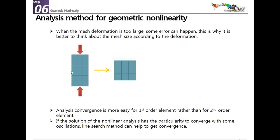Some advice for geometric nonlinearity: when mesh deformation becomes too large, errors can occur — think about mesh size relative to expected deformation. Convergence is generally easier with first-order elements rather than second-order elements. If the nonlinear solution tends to oscillate without converging, use the line search method to help achieve convergence — this is a specific but useful option.